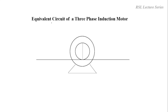Hello everyone. In this lecture we are going to discuss about the equivalent circuit of a three-phase induction motor. The three-phase induction motor can be seen as a transformer. We all know that the transformer works on the principle of mutual induction. Similarly, the induction motor also works on the principle of mutual induction. In the transformer we have a primary; similarly, in the three-phase induction motor we have the stator similar to the primary of the transformer. We give a three-phase AC supply to the stator, which produces a rotating magnetic field set up in the air gap between the stator and the rotor.